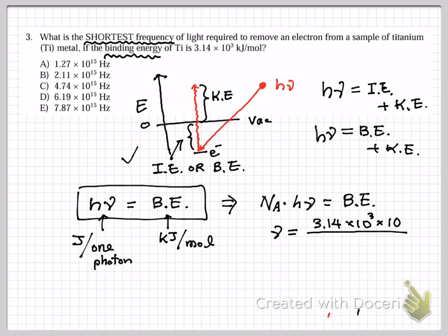Avogadro's number is 6.02 × 10^23, and h is 6.63 × 10^-34.